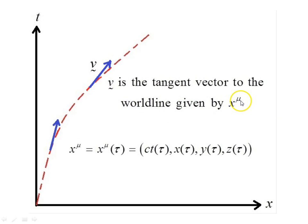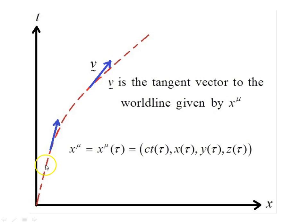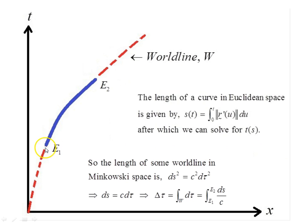The coordinates x^mu of the object on the world line are parameterized in terms of the proper time of the particle. The 4-position vector has components: time, x, y, and z coordinates, all parameterized in terms of proper time. The proper time is the time measured by a clock carried with the object as it makes its journey. Looking more closely at proper time, we have two events e1 and e2 on the world line and we find the length of that segment and how it relates to proper time.